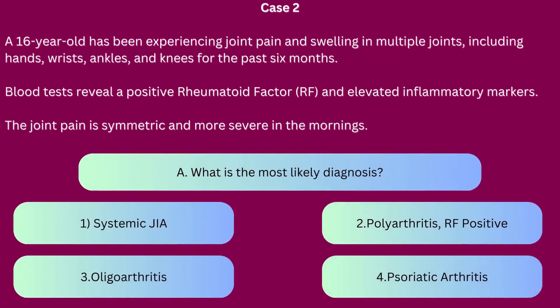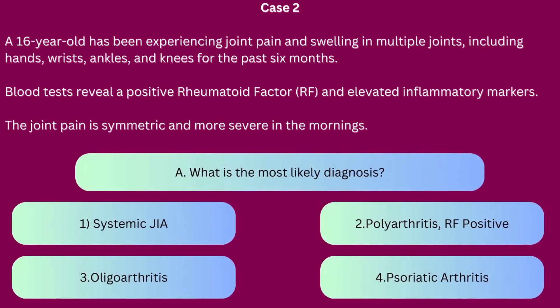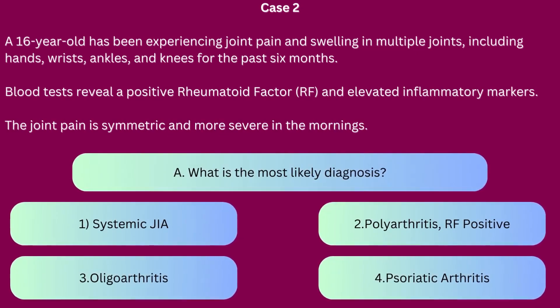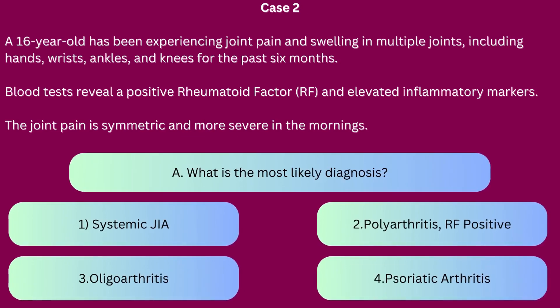Question A: What is the most likely diagnosis? 1. Systemic juvenile idiopathic arthritis. 2. Rheumatoid factor positive polyarthritis. 3. Oligoarthritis. 4. Psoriatic arthritis.